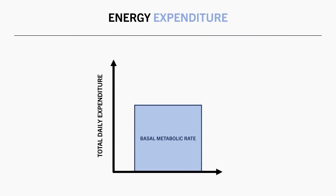First is basal metabolic rate, which is usually the largest contributor. It is thought to contribute around 60-70% of total energy expenditure in most cases. Second is the thermic effect of food. This is the smallest component, estimated to be around 10% of total daily energy expenditure in most cases.